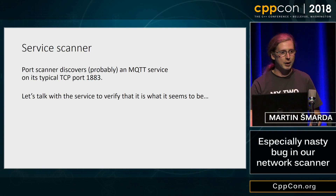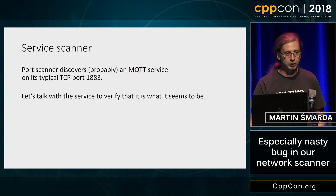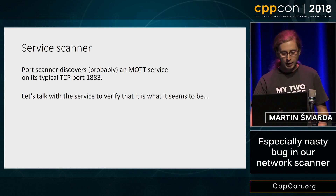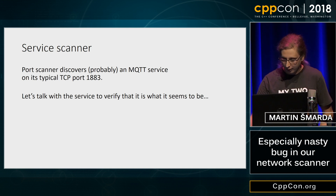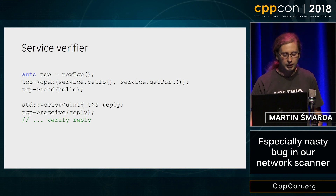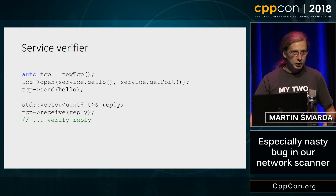So this is about a network scanner in Avast. One of its jobs is to discover services on network devices, and if a port scanner discovers a service you need to verify it somehow because it's not reliable. So if we have an MQTT service on a typical port, we need to talk to it before we flag it as confirmed. So you write something like that: create a TCP connection, open it to the service, send some hello message, get a reply and verify it. Sounds easy, right? All you need is the hello message.